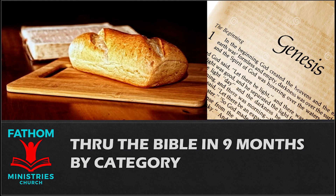Our sixth category begins with the book of Acts, which is the beginning history of the church under the leadership of the Holy Spirit and the Apostles. After we complete the book of Acts, we make our way through all the New Testament church epistles from Romans all the way through Revelation. Galatians 4. I mean that the heir, as long as he is a child, is no different from a slave, though he is the owner of everything. But he is under guardians and managers until the date set by his father. In the same way, we also, when we were children, were enslaved to the elementary principles of the world.